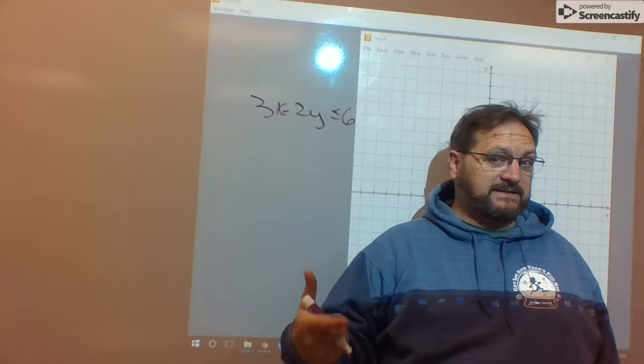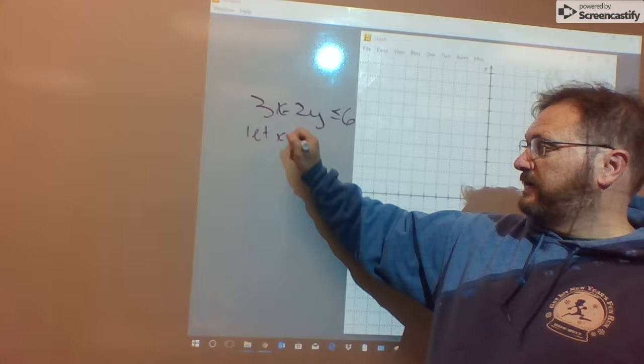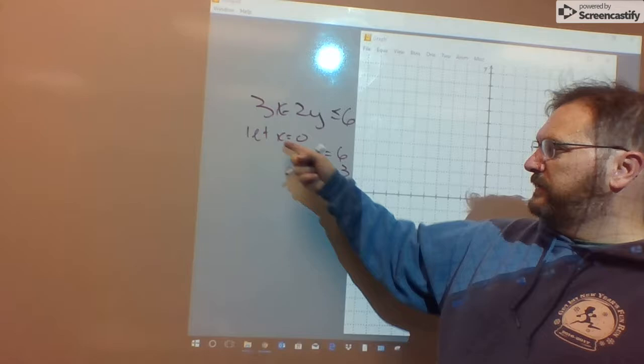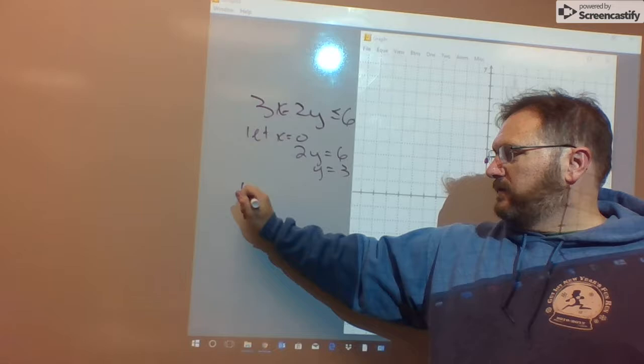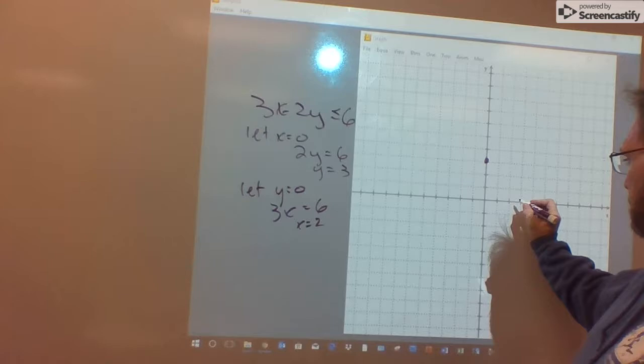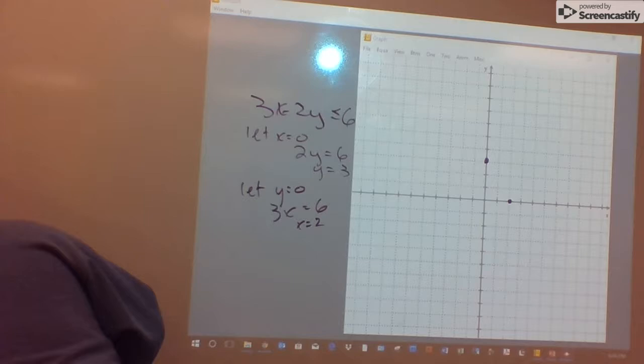3x minus 2y is less than or equal to 6. When it's in standard form, the easiest way to graph a line is to find its intercepts. For example, if we let x equal 0 in this inequality, think of it as an equation while we're trying to find our boundary line, we end up with -2y equals 6, or that y equals 3. So, plot the point 0, 3. If we were to let y equals 0, then our equation would be 3x equals 6, and x would equal 2. Plot the point 2, 0. And then play connect the dots.